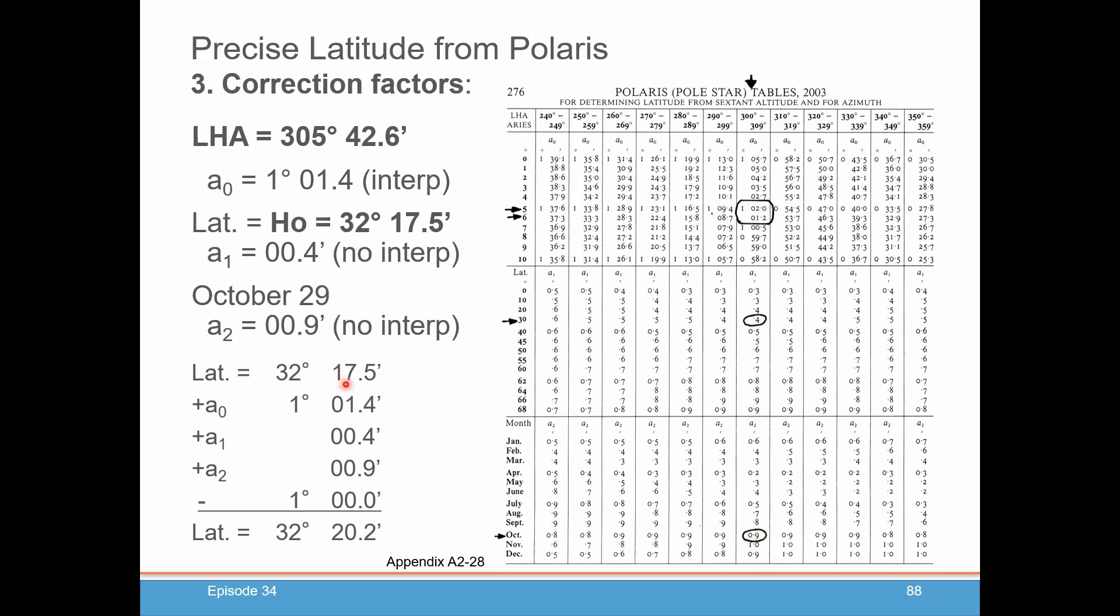And now you do your calculation. You start with your approximate latitude, which is just your HO. You add the A0, A1, and A2 to it. And then you subtract out 1 degree. And you'll get your precise latitude of 32 degrees, 20.2 minutes.